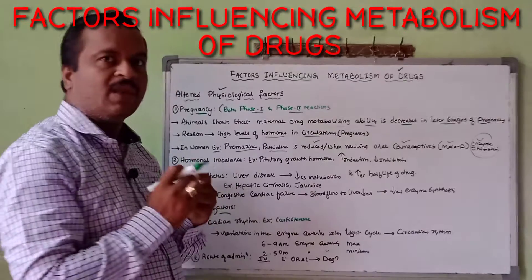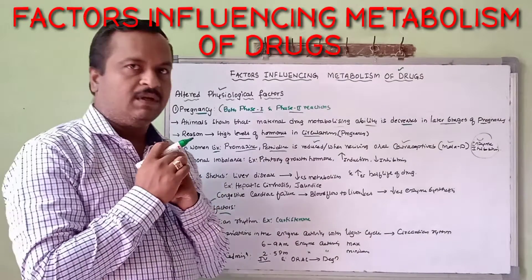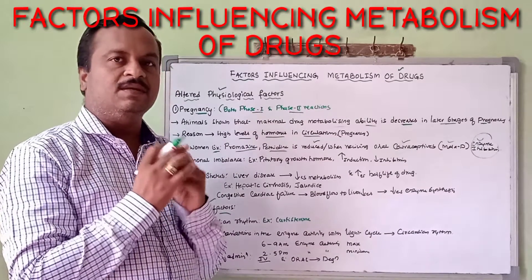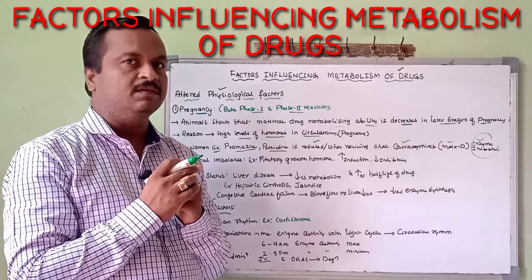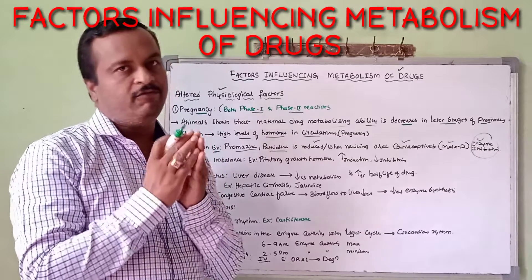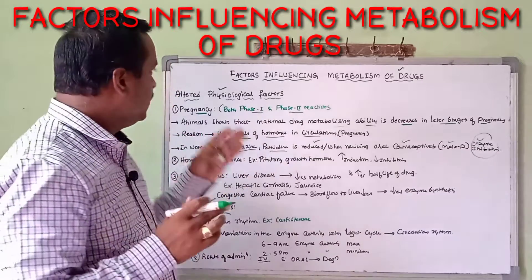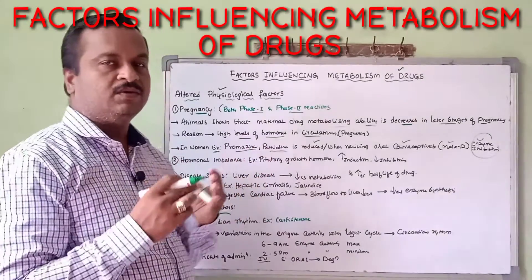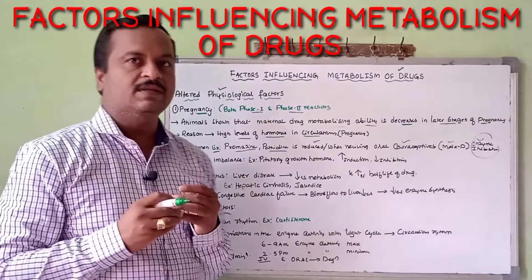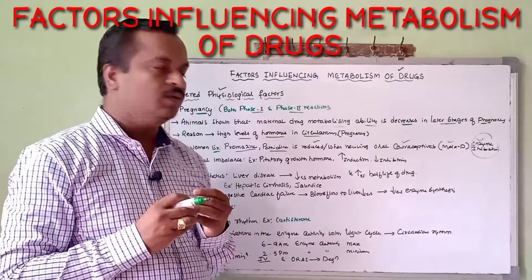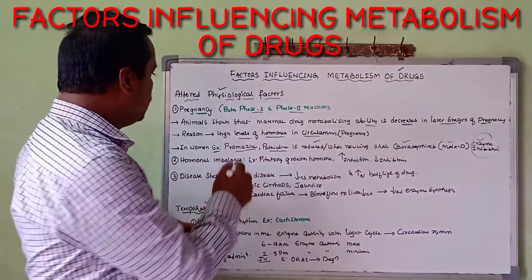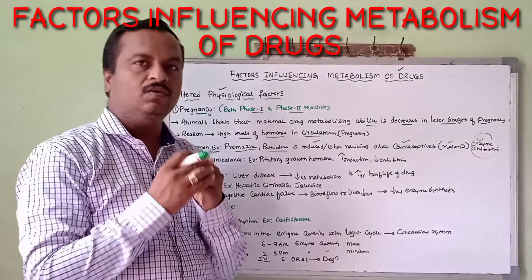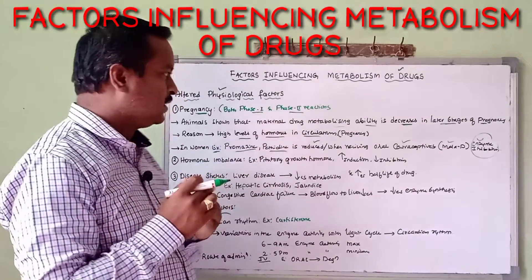That is why during pregnancy, at the final stage of pregnancy — around 6 to 9 months — the metabolism of some drugs will be varied. If we give promazine or pethidine to a pregnant woman, the rate of metabolism is reduced.